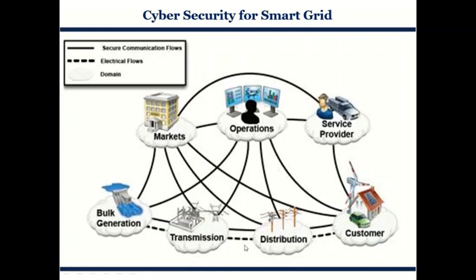From this diagram, you can easily understand that the electricity flow has a very minimal range or coverage domain, whereas the secure connection or communication is flowing across various domains — markets, operational service providers, customers, distribution, transmission, bulk generation, and so on.